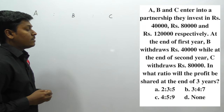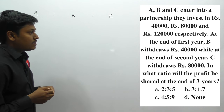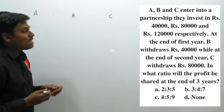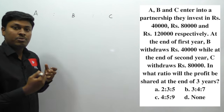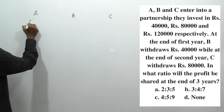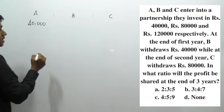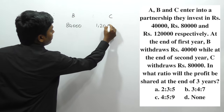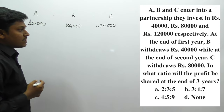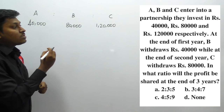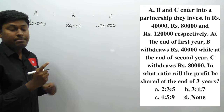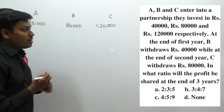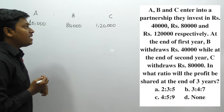Question number 1: A, B, and C enter into a partnership. They invest rupees 40,000, 80,000, and 1,20,000 respectively. After the end of the first year, B withdraws rupees 40,000, while at the end of the second year, C withdraws rupees 80,000. In what ratio will the profit be shared at the end of three years?